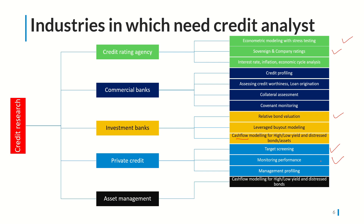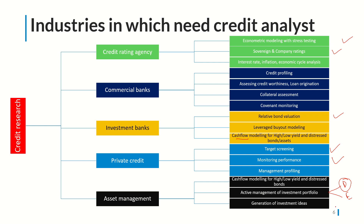Asset management companies also need credit analysts, similarly for cash flow modeling and active management of investment portfolios. A portfolio can have both debt and equity securities, and you need to track the creditworthiness of various corporate and government issuers to manage the portfolio well. You generate investment ideas across high-yield and low-yield bonds to balance the portfolio, and exploit arbitrage opportunities between similarly rated bonds with different yields or between CDS spreads. You can also create synthetic assets — financial assets created without investing equal amounts but generating similar cash flows.